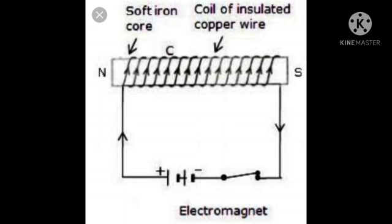Wrap a wire around a soft iron piece known as the core. When an electric current passes through the wire, the iron piece behaves like a magnet. A magnet made using such an arrangement is called an electromagnet, as you have seen in the figure.